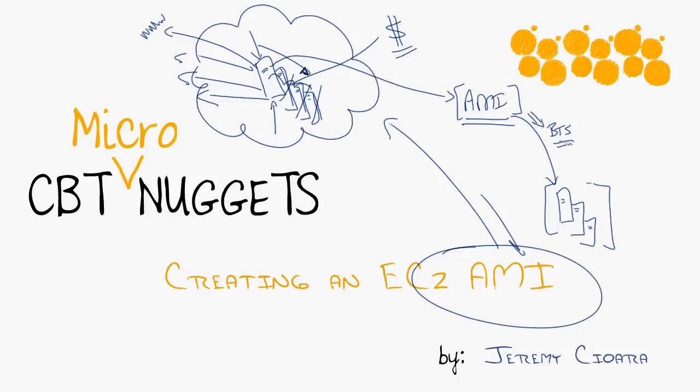Or perhaps you put a machine on ice and that was last year, so you create some bootstrapping to update some key components or apply some key updates, so you don't have to recreate that whole image. You can have it script itself to kind of build itself on the fly.